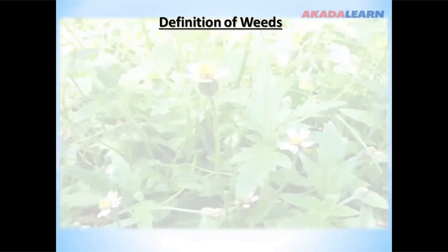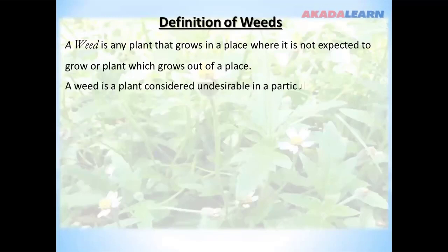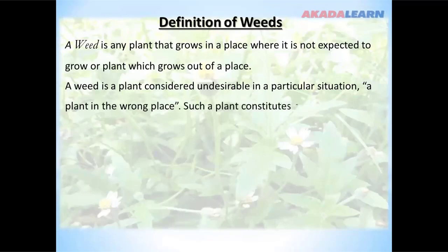Definition of weeds: A weed is any plant that grows in a place where it is not expected to grow, or a plant that grows out of place. A weed is a plant considered undesirable in a particular situation — a plant in the wrong place. Such a plant constitutes a nuisance either to man, livestock, or other plants.